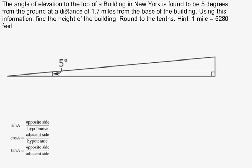In this problem, we're given the angle of elevation to the top of a building in New York is found to be 5 degrees.